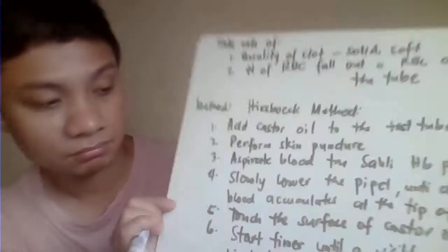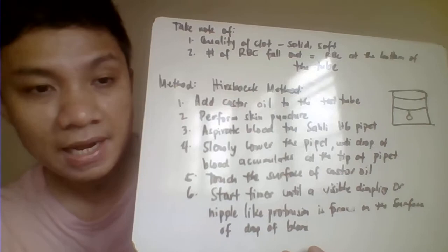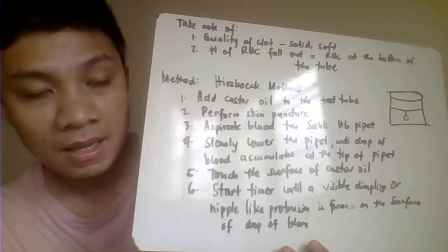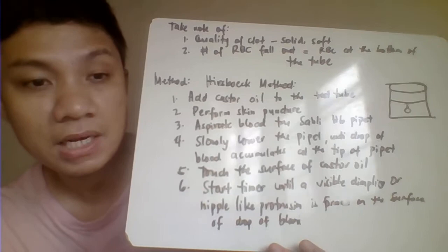Abnormality in your clot retraction is related to the disorder Glanzmann's thrombasthenia, because of the defective receptor glycoprotein 2B3A. If there's abnormality in clot retraction, we're most likely considering Glanzmann's thrombasthenia as the problem.